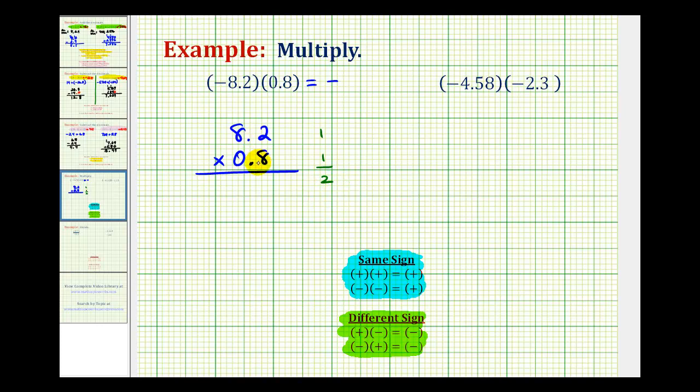So knowing that, we can now multiply, ignoring the decimal points. So now we'll multiply by 8, 8 times 2 is 16, carry 1, 8 times 8 is 64, plus 1, that's 65.